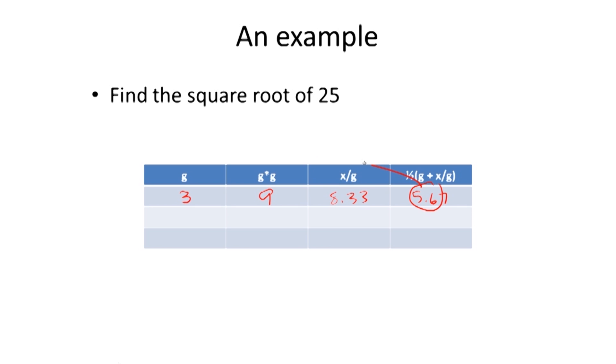This now becomes my new guess, 5.67. I multiply those together. I happen to know that comes out to be about 32 and a half. It's gotten closer to 25, but it ain't there yet. So that's not close enough. Again, let's take x divided by this g, which turns out to be about 4.41. And then I take g and x over g, and I average them and I get 5.04.